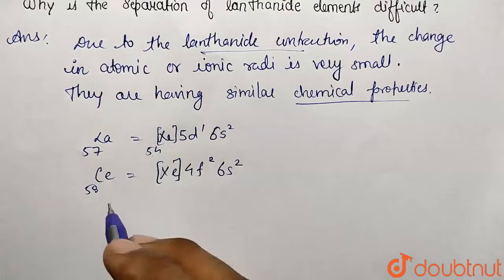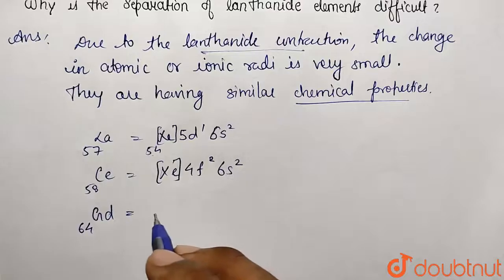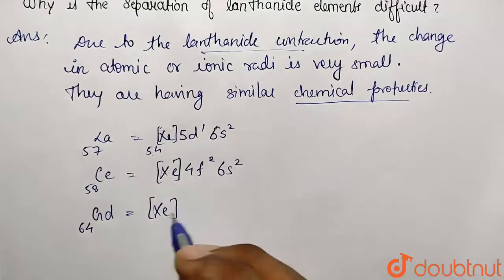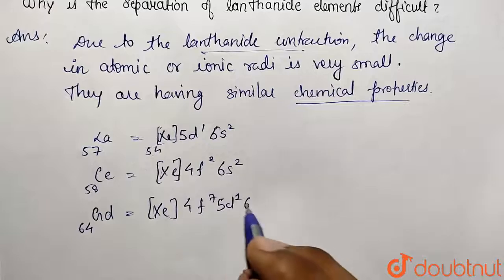If I want to take some other example of lanthanide series, let's take gadolinium. So this is having atomic number of 64 and its configuration is what? Xenon. This is containing 4f7, 5d1, and 6s2.